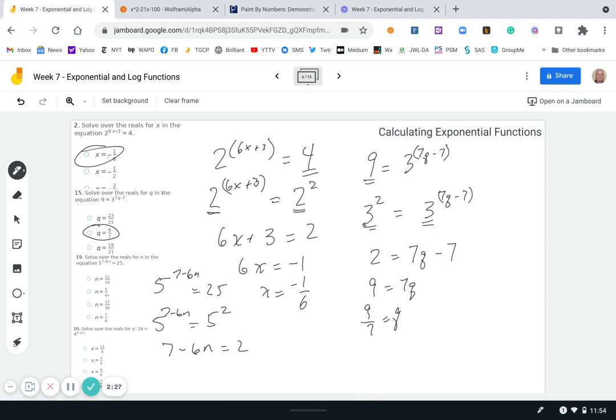And then we subtract 7 from each side. You get minus 6n equals negative 5, n equals 5/6. And that's right here.